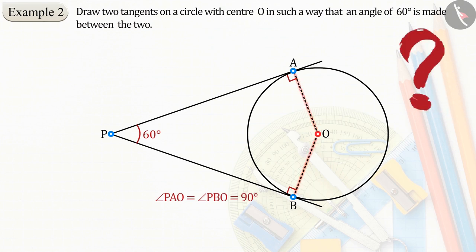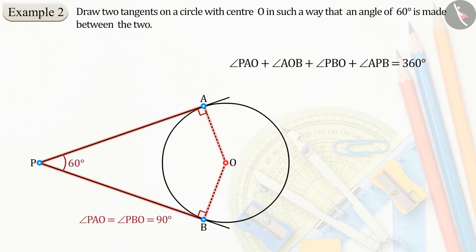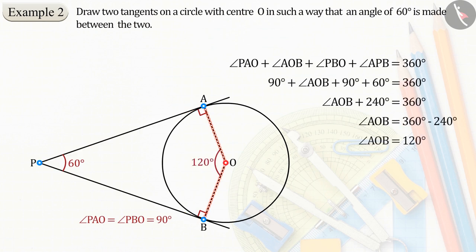Can you tell the value of angle AOB? Absolutely right. The sum of the four angles of a quadrilateral is 360 degrees. Therefore, the value of angle AOB will be 120 degrees.